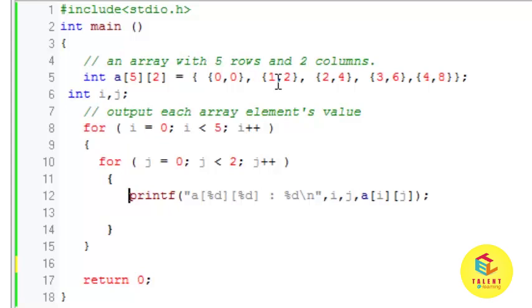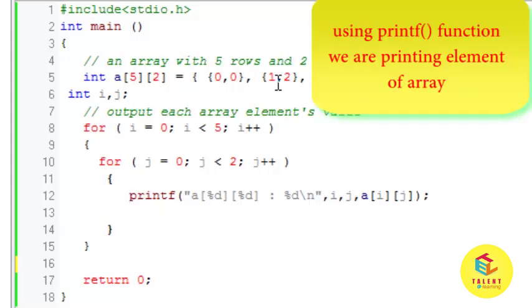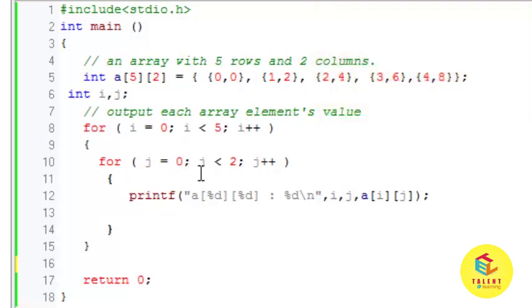So this way once j becomes false i is incremented and j is initialized by zero once again. And all the elements of two dimensional array are get printed.